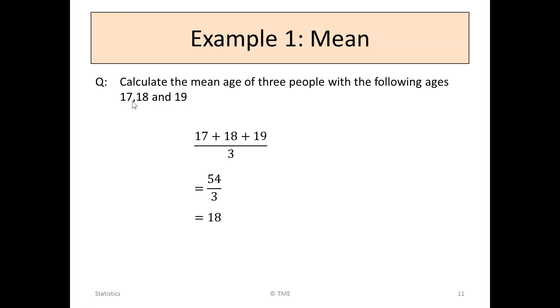Well, we simply take the three ages involved, the 17, 18 and 19, add them up and divide by 3. 17 plus 18 plus 19 is 54. 54 divided by 3 is 18.